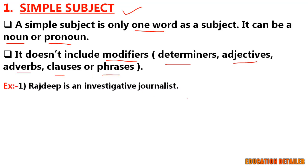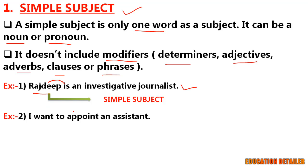See the first example: Rasdip is an investigative journalist. As the sentence is about Rasdip, no doubt he is the subject here. And as the subject is only one word, therefore it is called the simple subject. No modifier is added with the subject. After the main noun, there is a verb.